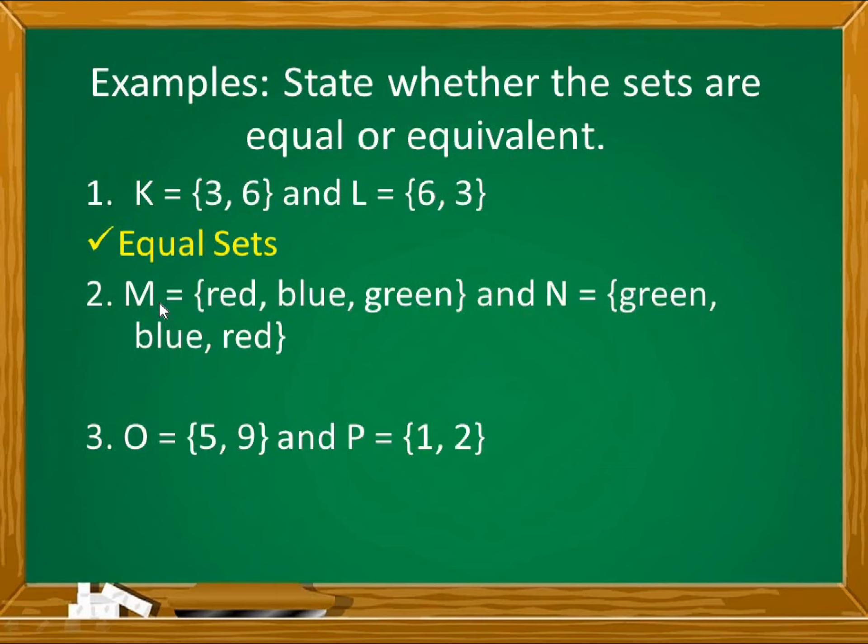For number 2, set M with elements red, blue, and green, and set N has elements green, blue, and red. Again, naiba lang ng pagkakasunod yung mga elements. But they still have the same cardinality o yung bilang ng elements, and exactly the same elements. So, these two sets are equal.